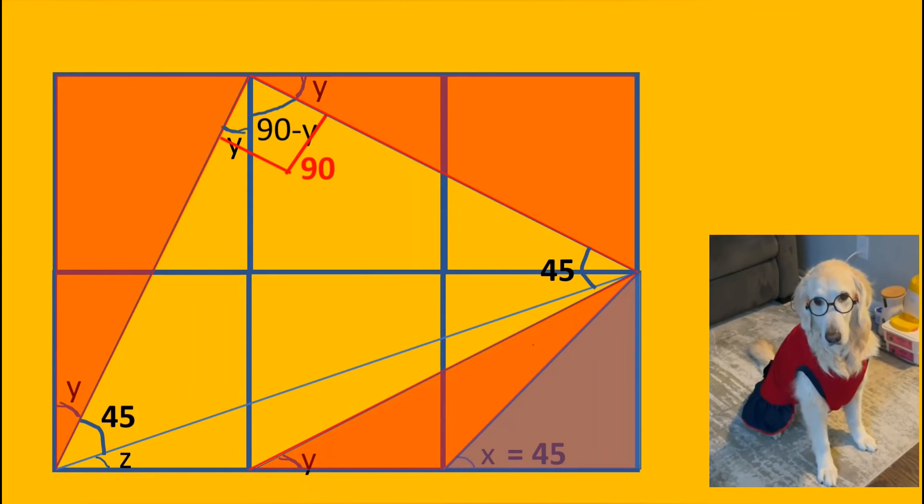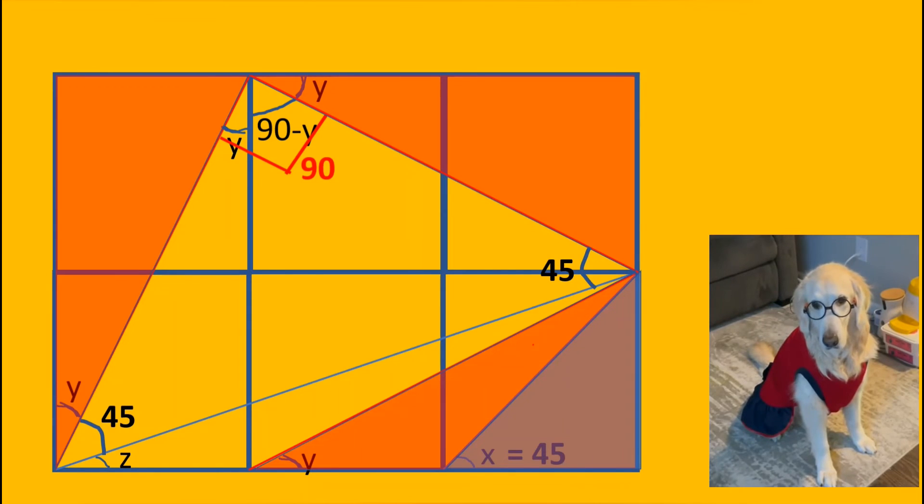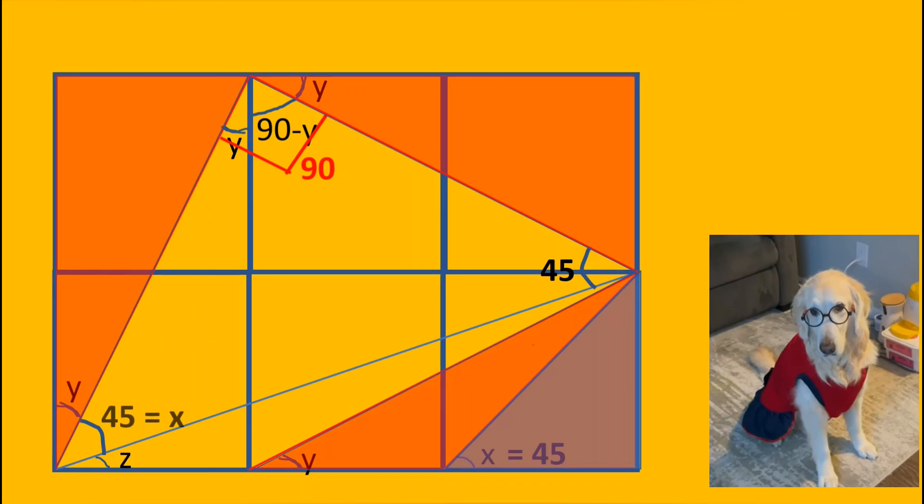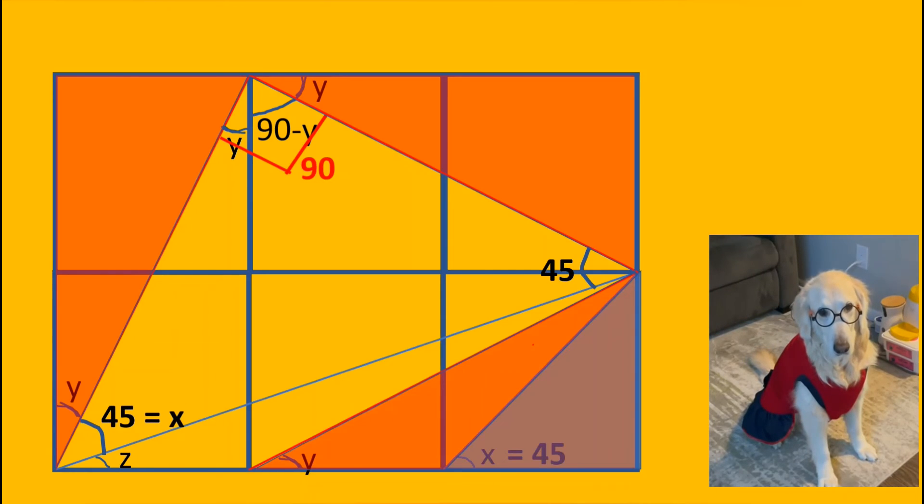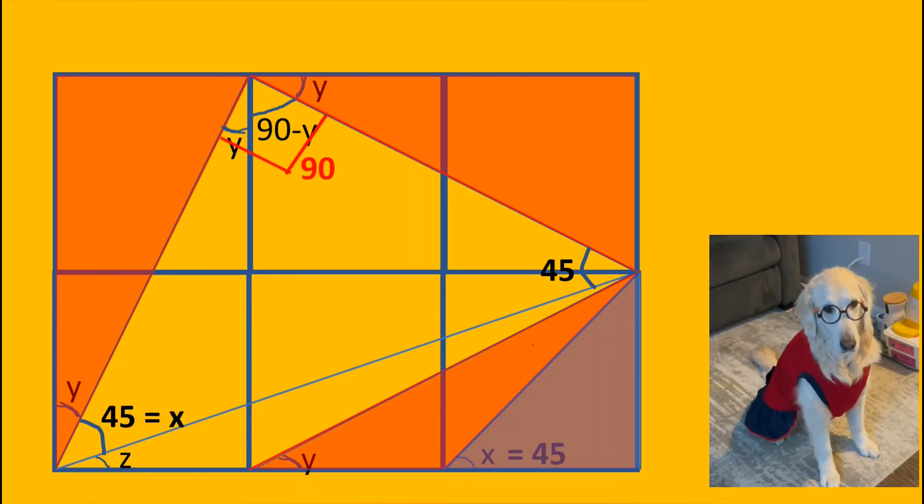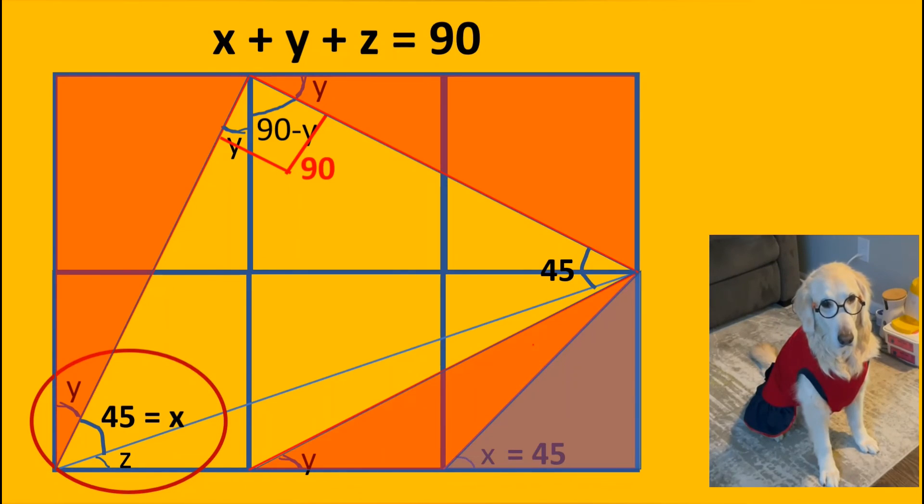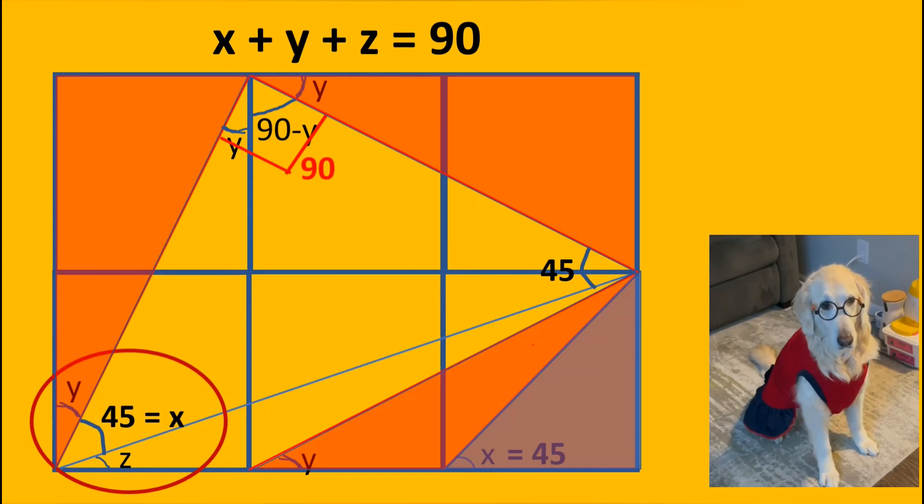The diagonal of the square is the angle bisector. So, x is also equal to 45. We can write x when we see 45. It is between y and z. So, sum of x, y and z is equal to 90.